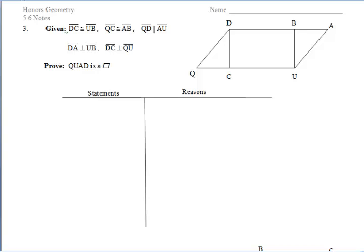In the second set of notes on section 5.6, what I'd like you to do is try numbers 3 and 4 on your own. Those are two proof examples that will help you practice the various methods to prove that a quadrilateral is a parallelogram.